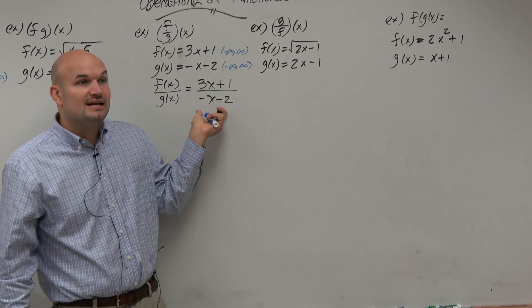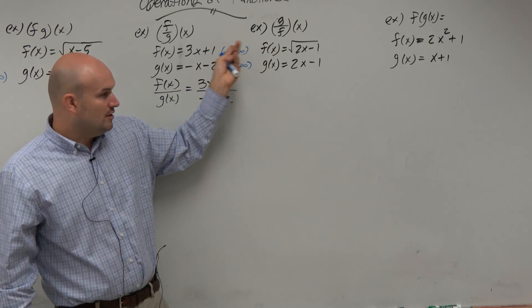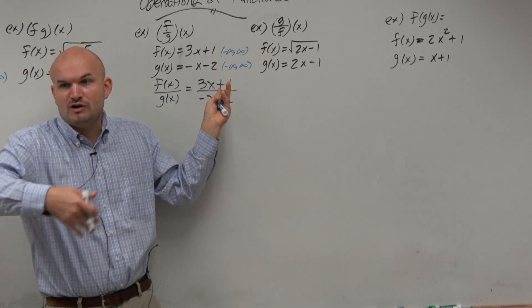with division, we know we can't equal a 0. So even though we have all real numbers for these, when you put this function in the denominator, you've created a new constraint.